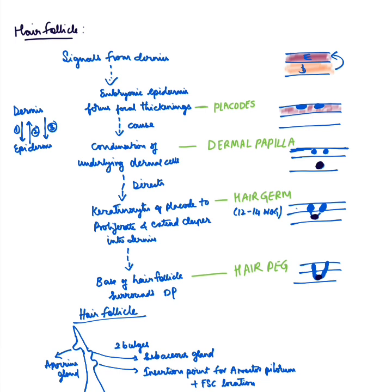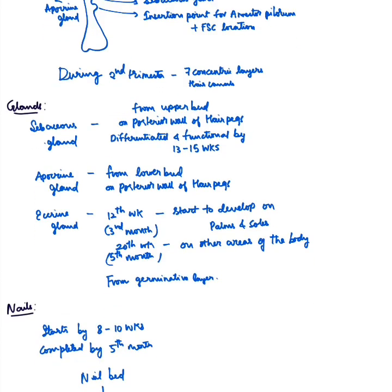To summarize hair follicle development: first, placodes form as epidermal thickenings from dermal signals; then dermal cells condense to form the dermal papilla; then hair germ forms as keratinocytes proliferate deeper into the dermis; then the hair peg stage forms as the base of the follicle is surrounded by the dermal papilla. By the end of the second trimester, all seven concentric layers of the hair follicle are formed, the hair canal is fully developed, and by 24 to 28 weeks the hair continues to grow.